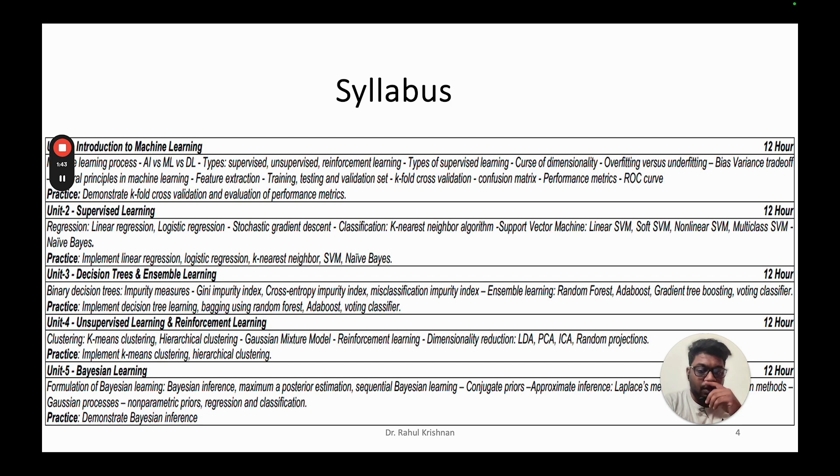Then in the fourth module, we get into unsupervised learning. We will finish up the supervised learning in the second and third units, then the fourth unit will be unsupervised and reinforcement learning. Then finally, in module 5, we will look into Bayesian learning.